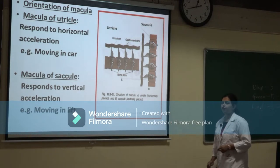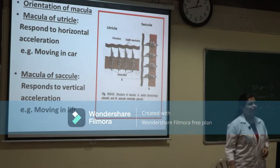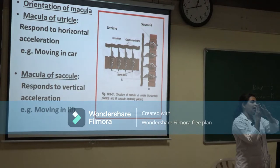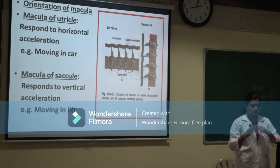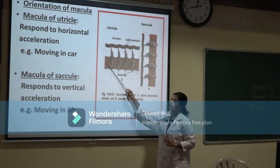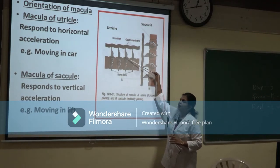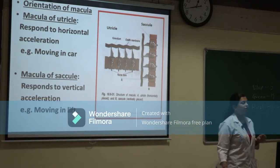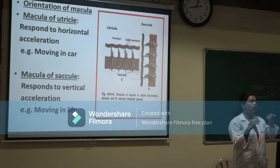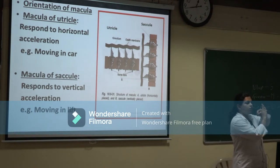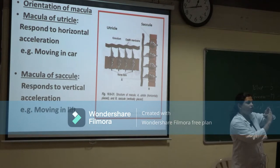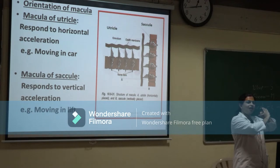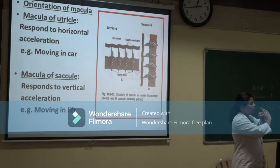In the utricle, the cilia are vertical and the neuroepithelium is horizontal. When you are driving a car and accelerate, the cupola — having high specific gravity due to calcium carbonate crystals — is pulled backward by inertia, bending the cilia toward the kinocilium and stimulating the utricle. This stimulation occurs during acceleration or deceleration; when constant speed is reached, stimulation stops.